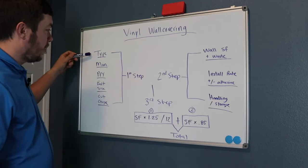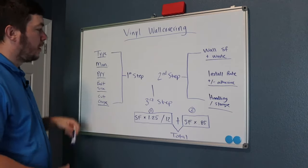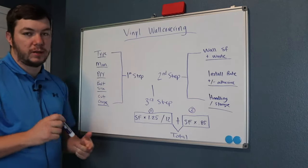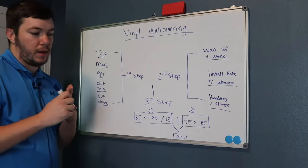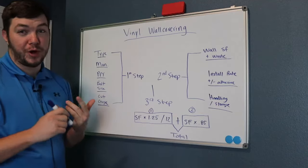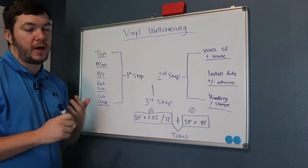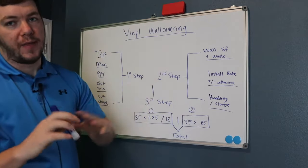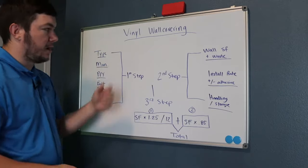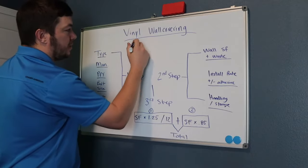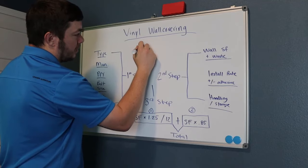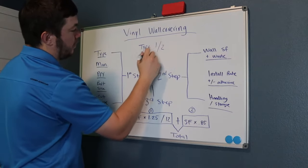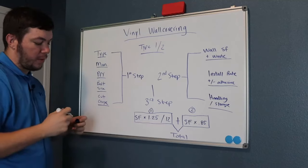The first things you need to know when you get your drawings to do the bid — you need to know what type of wall covering it is. Is it type one, type two, type three? You even have wood-backed wall covering, digital wall covering where they print out a graphic. That's a whole different topic. This is mainly going to cover type one and type two.